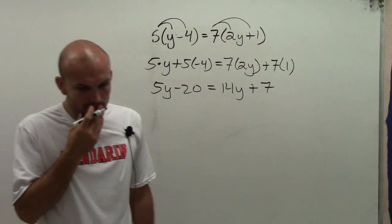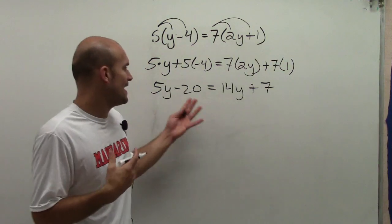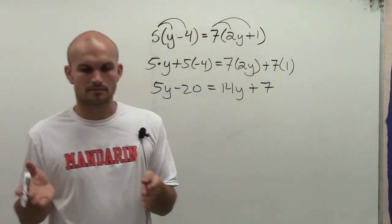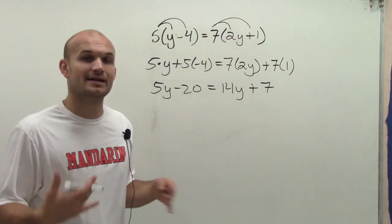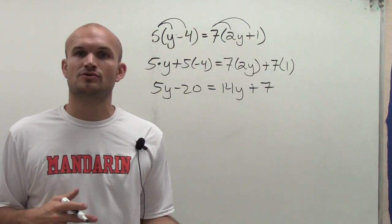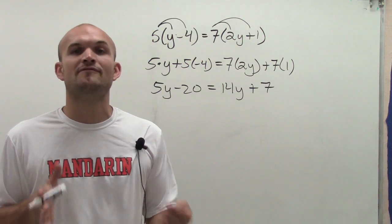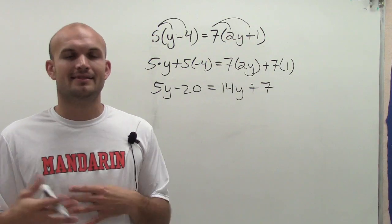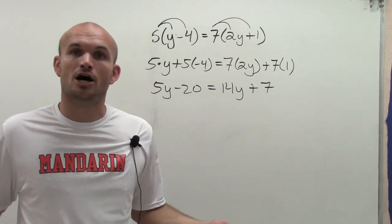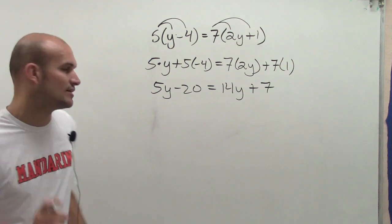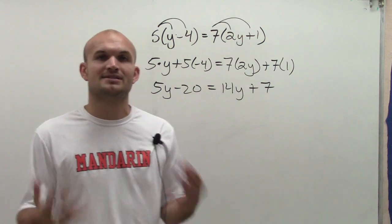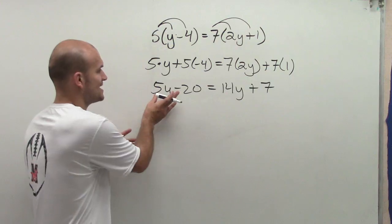So now what I have is a problem with a variable on both sides. But it's at least somewhere I can use my reverse order of operations. Before I start looking at reverse order of operations, I've got to make sure that I have my variables all on the same side. That's going to help me determine what operations I need to undo to my variable, so I want to get all the variables on one side.